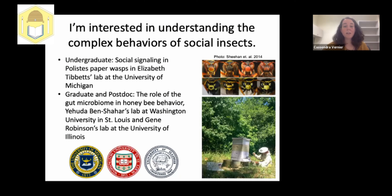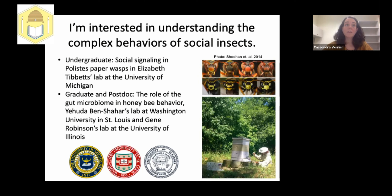Similarly, in Polistes dominula they also have distinct facial markings, but rather than individual recognition they use these to signal fighting ability and social status. Individuals with more black pigment on their face are known to be stronger, and they can use this to determine if they want to fight another individual over territory or reproductive rights. Working in that lab really got me interested in social insects.